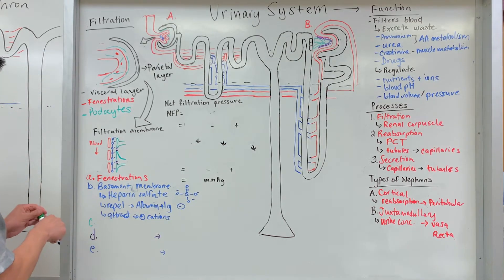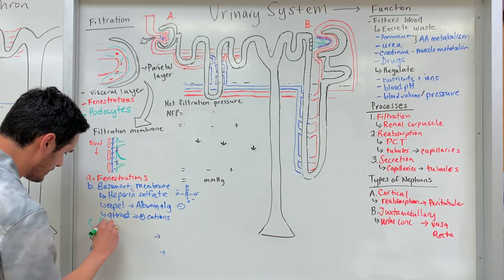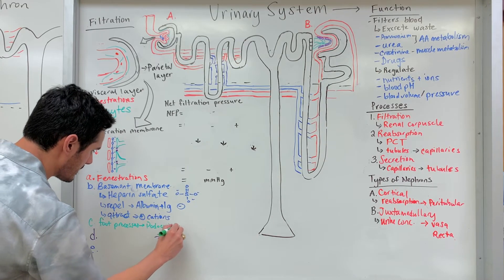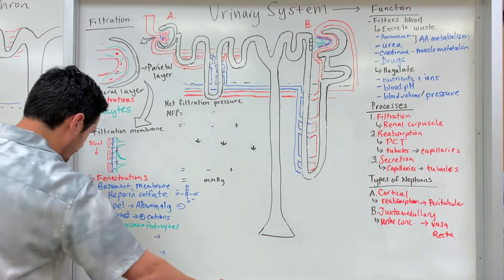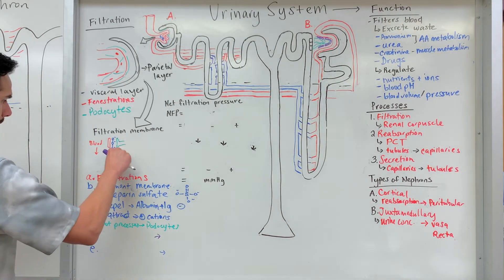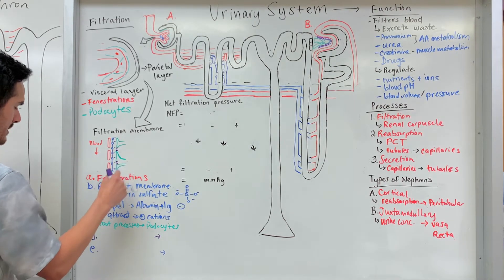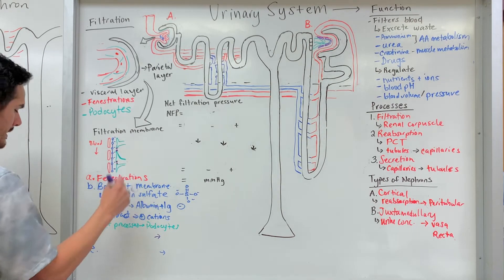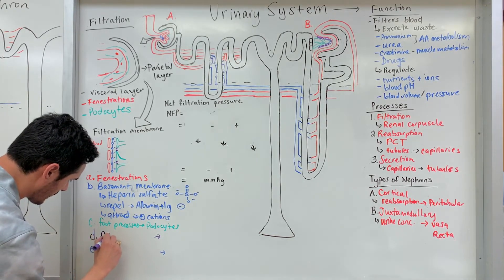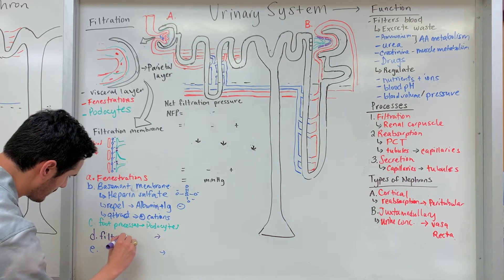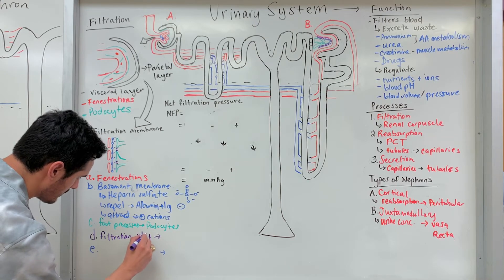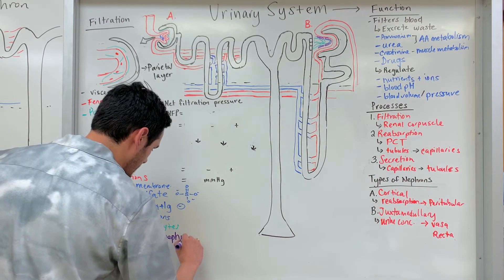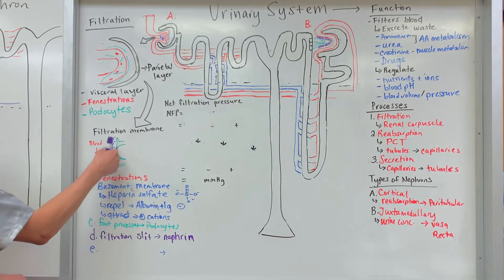Part C represents the foot processes of those podocytes, which act as a reinforcing layer. Part D shows a purple protein in between the podocytes within slits — these are known as filtration slits, and they are composed of a specific protein known as nephrin. Nephrin is found in between each of these different podocytes.